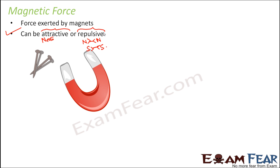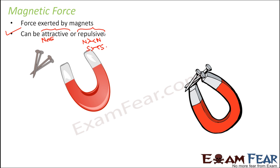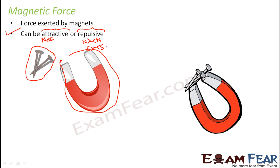Let us think of some examples where we see these kinds of magnetic forces. Suppose you have a magnet and bring some nails near it. The nails get attracted by the magnet. Now, do you think that the magnet and the nails were in contact with each other? There is absolutely no contact between them, but still the nails were feeling an attraction towards the magnet due to the presence of an attractive force. This force existed even when the objects were not in contact with each other. Therefore, magnetic force is a non-contact force.